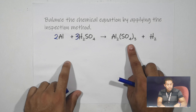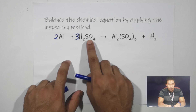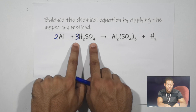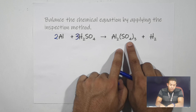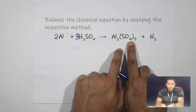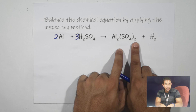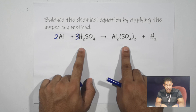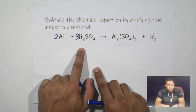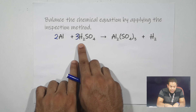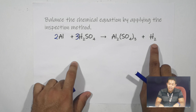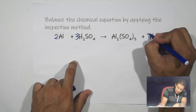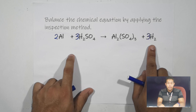Next, we balance oxygen. On the reactant, H2SO4 has four oxygens, times three, giving 12 oxygens on the reactant. On the product, Al2(SO4)3 has four oxygens inside the bracket, times three from the subscript, giving 12 oxygens on the product — already balanced. Next, hydrogen: three times two gives six hydrogens on the reactant. On the product, H2 has only two hydrogens. To balance, we put a coefficient of 3 in front of H2 on the product, giving six hydrogens. Now hydrogen is balanced.